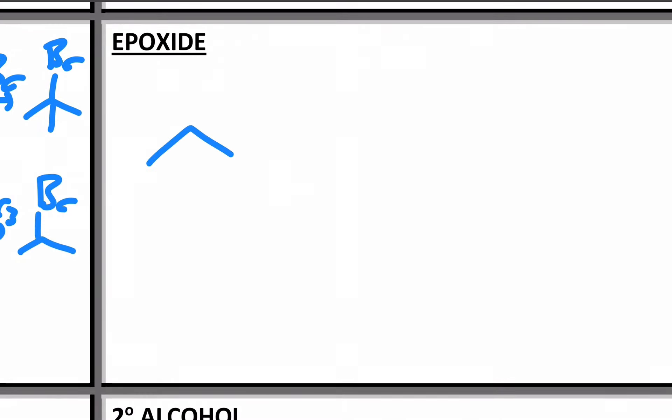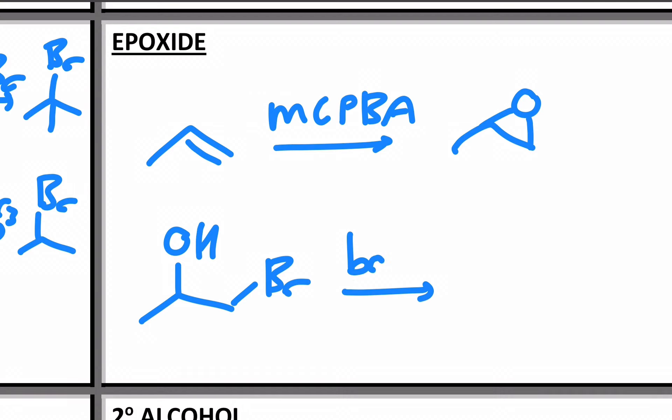Next, epoxides. Only one way for now: MCPBA. That'll get you to one new oxygen and your epoxide. Technically, there's another way. It would come from an acid-base followed by an SN2 if you had a halohydrin and then an equivalent of base. This will do an acid-base, SN2, and you will also get an epoxide. That's really just a way of making an ether.